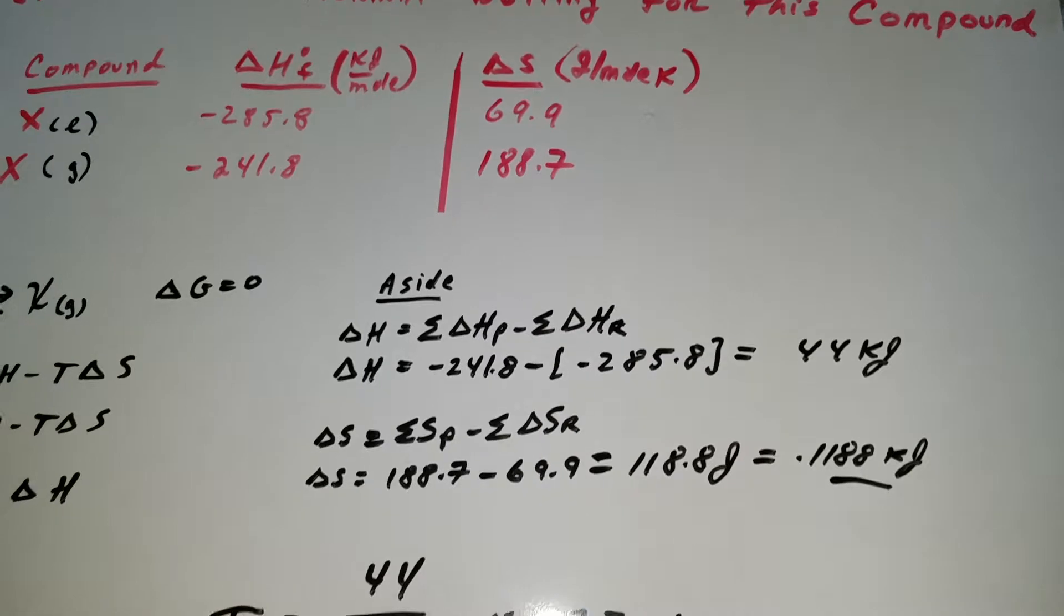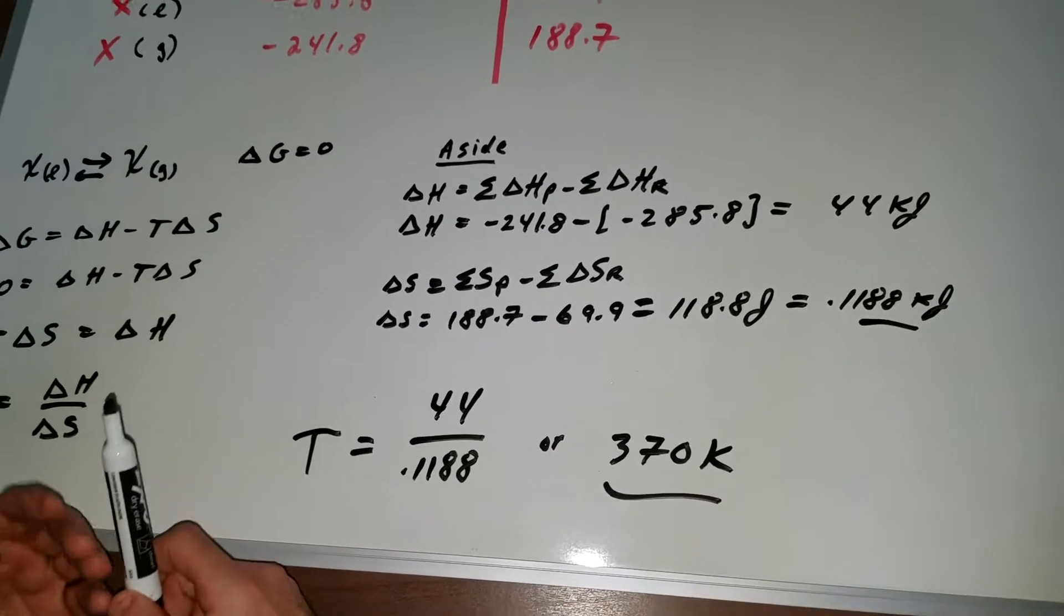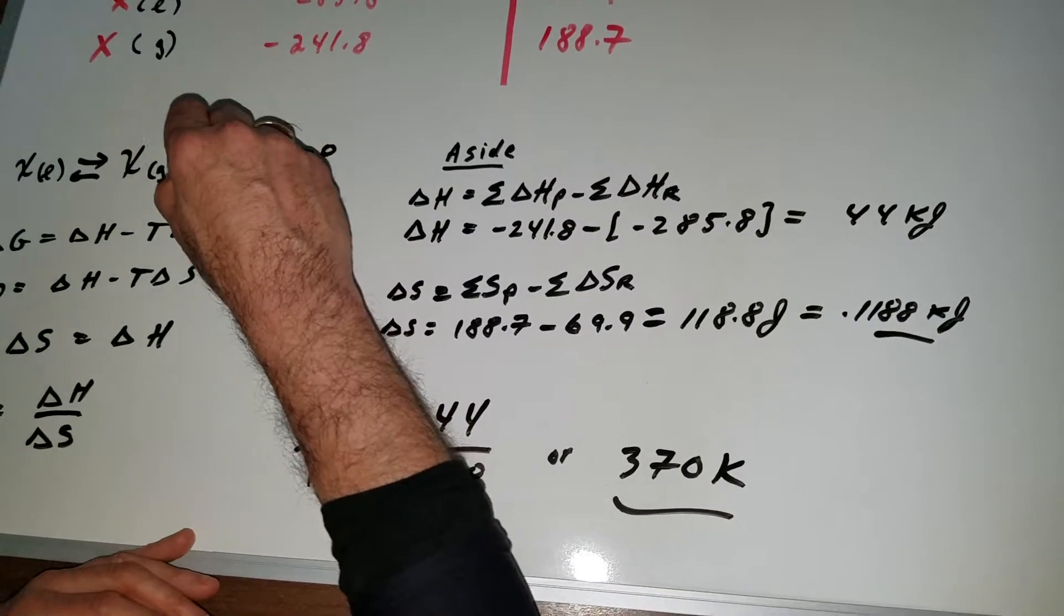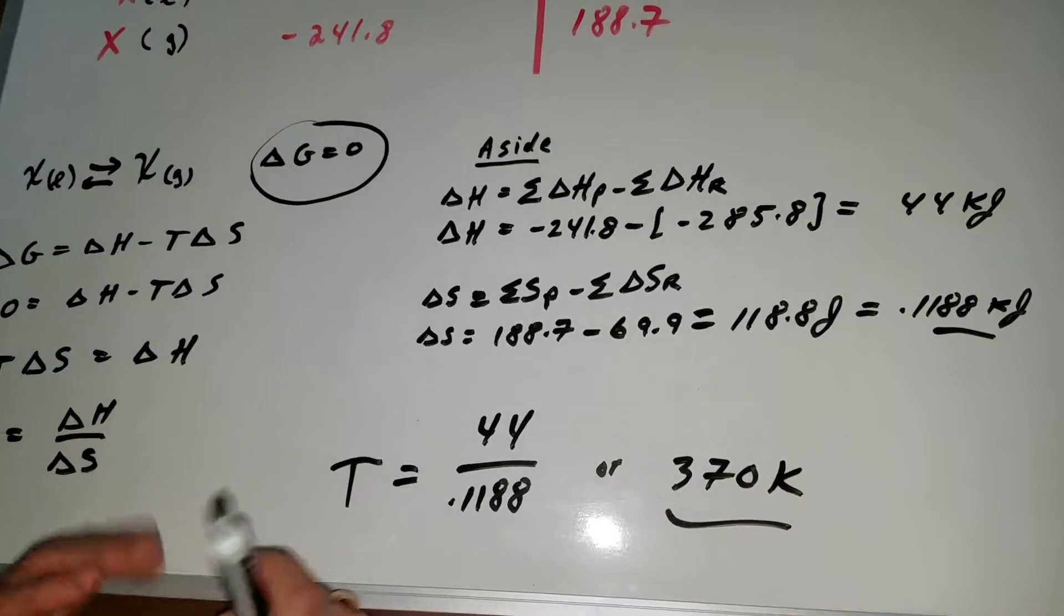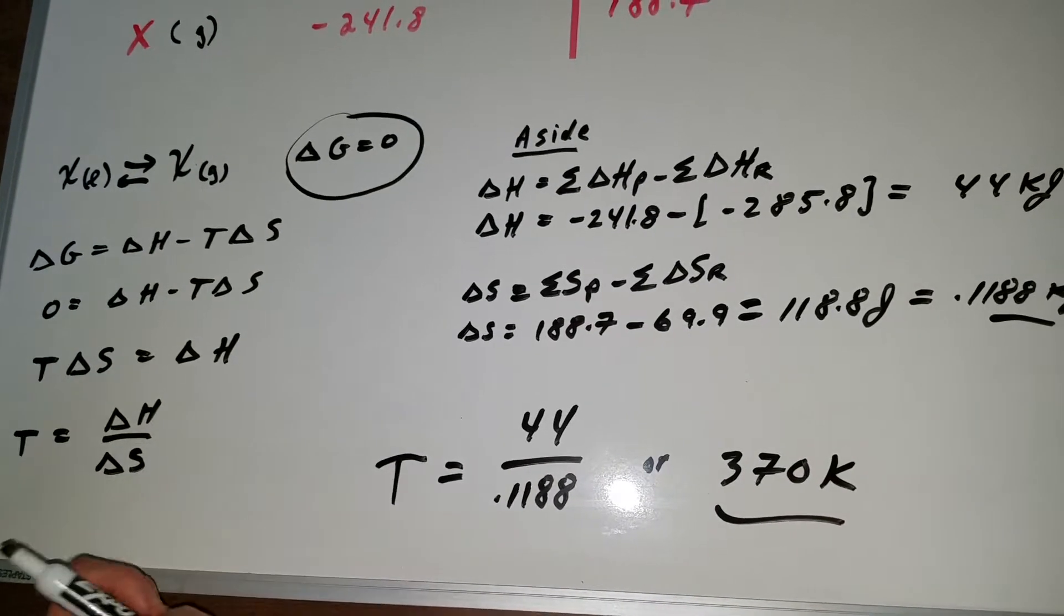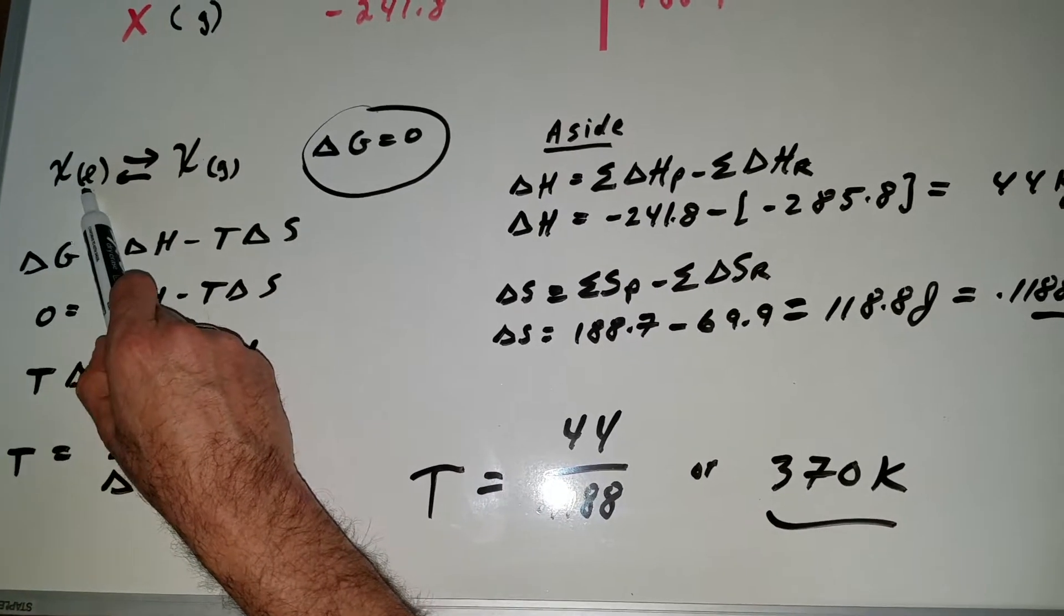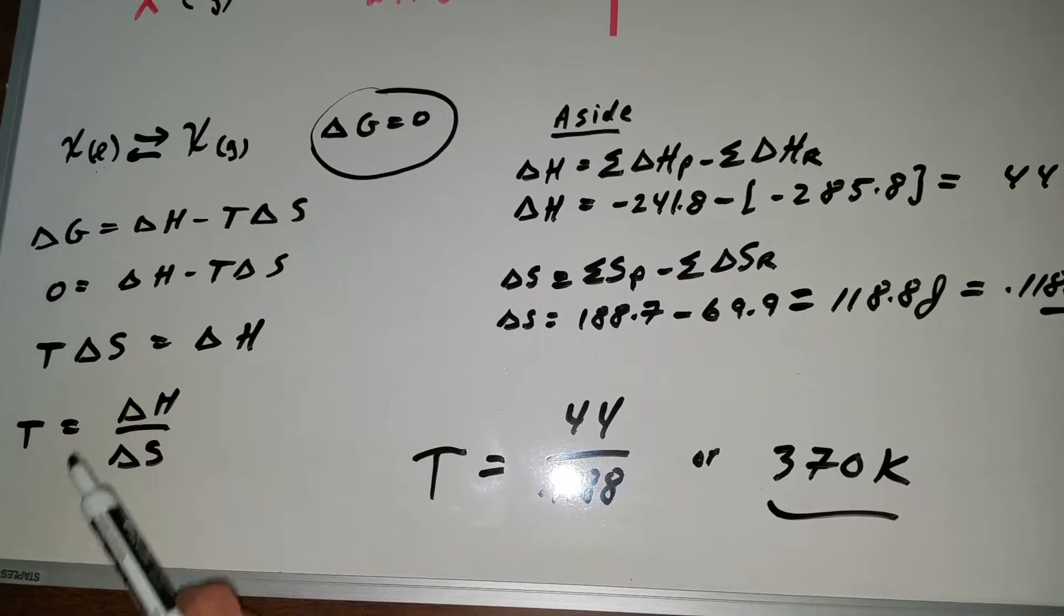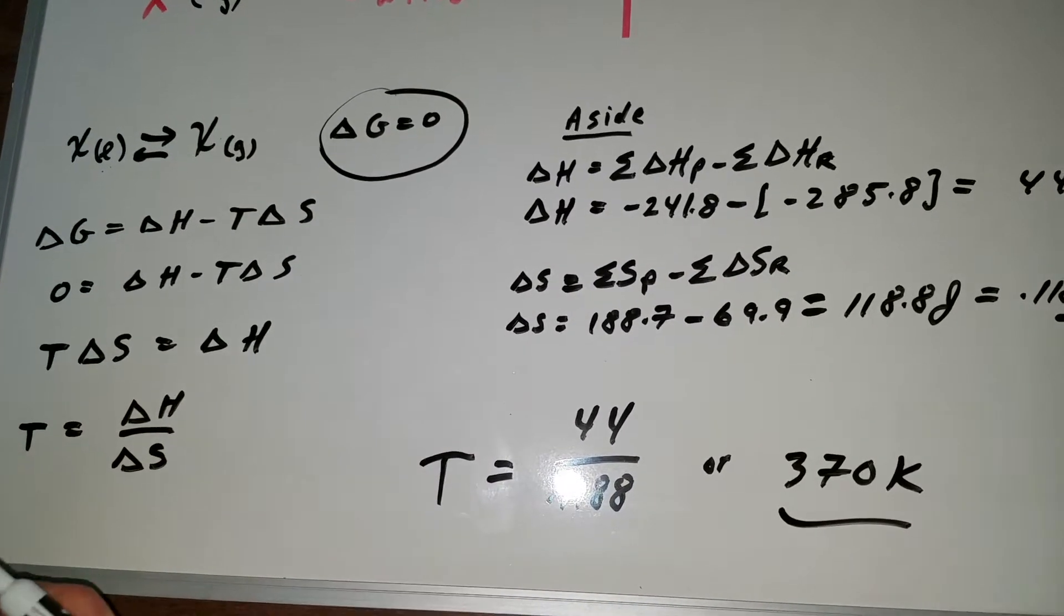Now the first thing we need to understand is whenever you're at a boiling point or a melting point or a freezing point it's an equilibrium point and at equilibrium the delta G is equal to zero. So what I do knowing that is I write the reaction first. When something is boiling we're going to take a liquid into the gaseous state. Up goes my formula delta G is delta H minus T delta S.